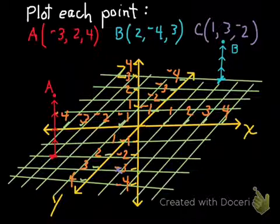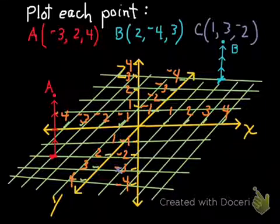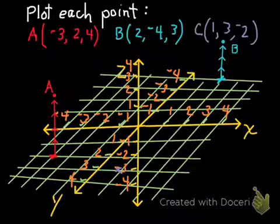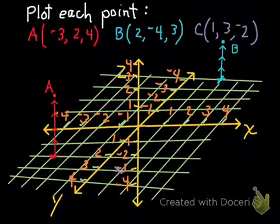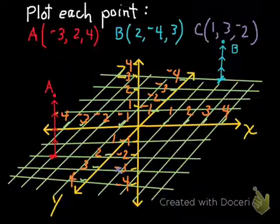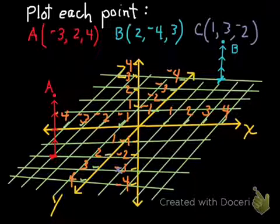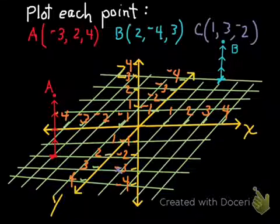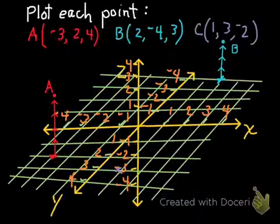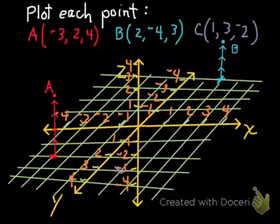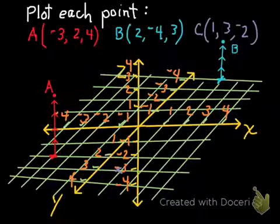We are now plotting ordered triple point B. I first need to locate the ordered pair (2, -4) on the checkerboard floor — go two units on the X axis and negative four on the Y axis. I see where those two grid lines intersect and draw an X marks the spot. From there, I arrow up three units and have successfully plotted point B at (2, -4, 3).